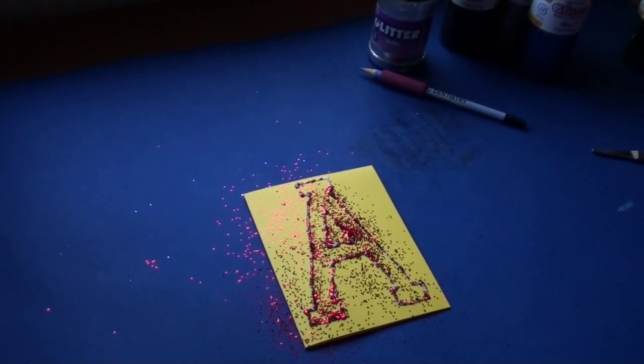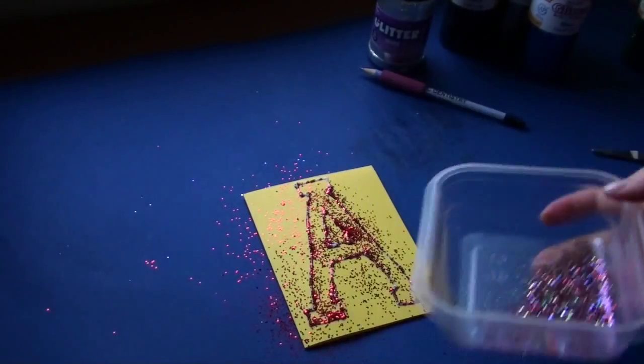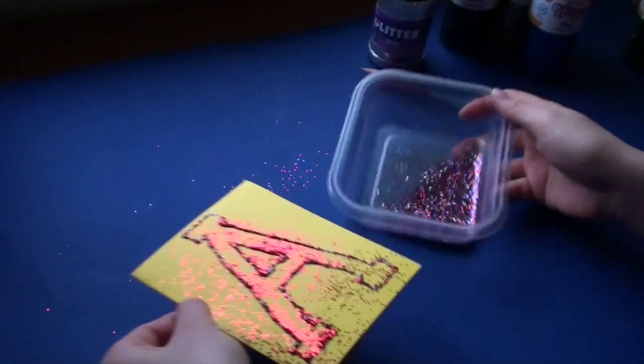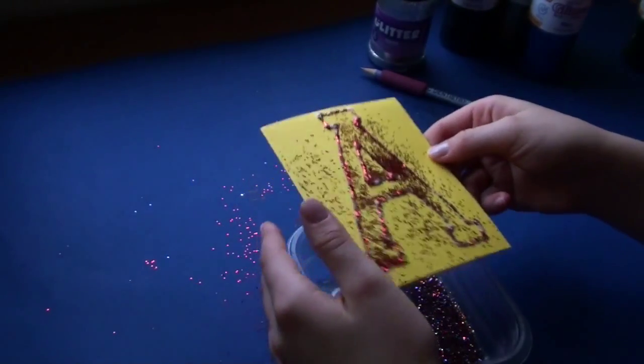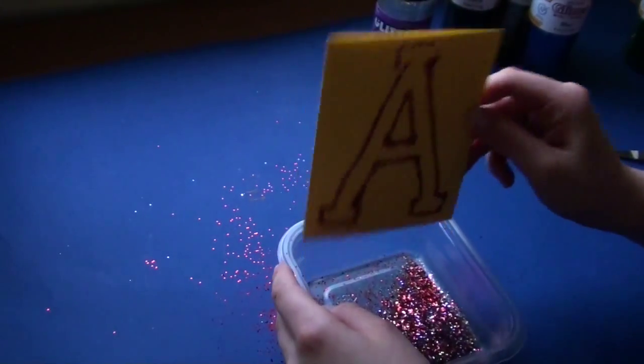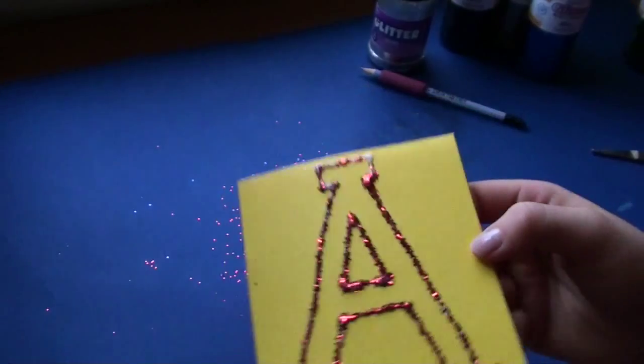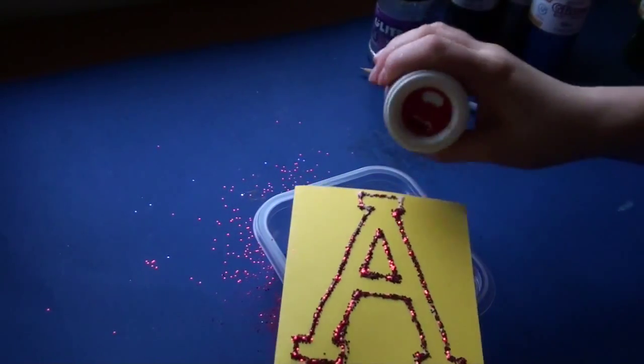Once you're done with that, have a container with different colored glitter in it. Then take your card, shake it a little bit over the container, and let all your glitter go into the container. And if you need more glitter, just sprinkle some more.